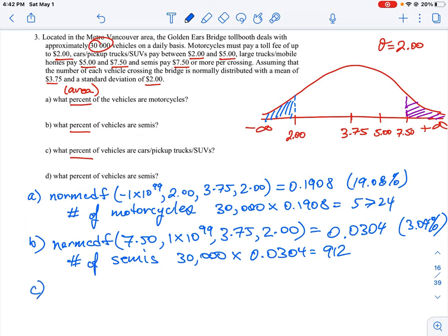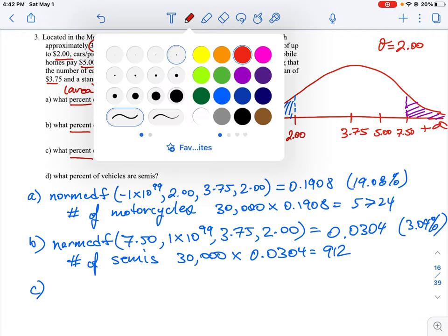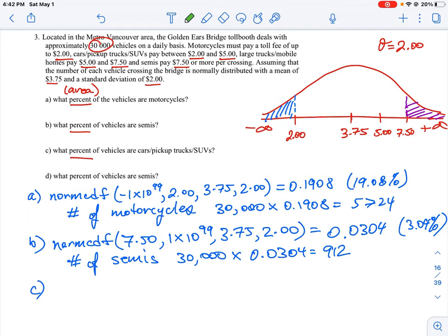For the last question, I'll just set it up partially. What percent of vehicles are cars, pickup trucks, and SUVs? Cars, pickup trucks, and SUVs are everything from $2.00 to $5.00, so that's the big chunk. That means it is the area between the $2.00 and $5.00 mark.